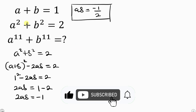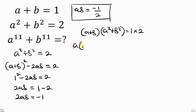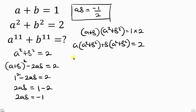Our next step will be to multiply equation 1 by equation 2: (a plus b) times (a squared plus b squared) equals 1 times 2, which is 2. Opening up the brackets, we have a times (a squared plus b squared) plus b times (a squared plus b squared) equals 2, which expands to a cubed plus ab squared plus a squared b plus b cubed equals 2.